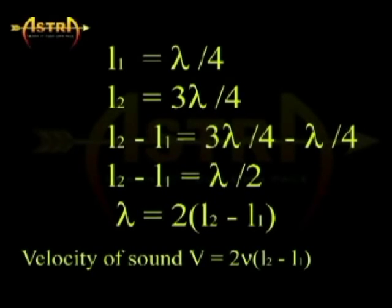We see that L2 is equal to 3λ/4. If we subtract L2 minus L1, that is 3λ/4 minus λ/4, we get λ/2. From this, the wavelength λ is equal to 2(L2 - L1).